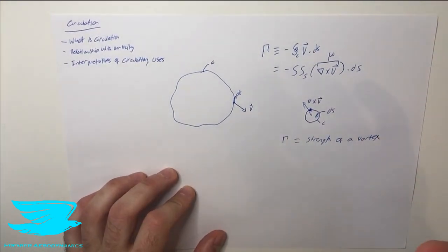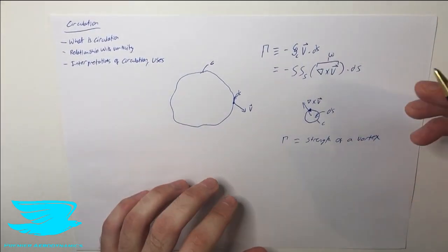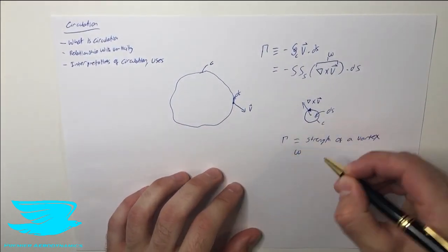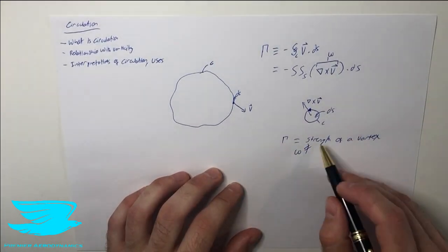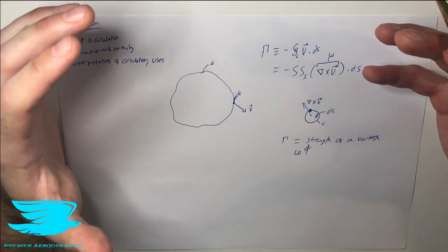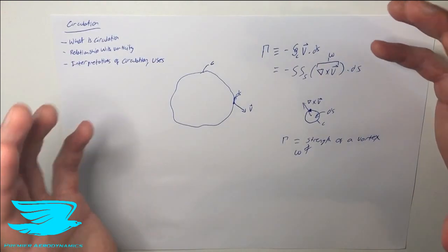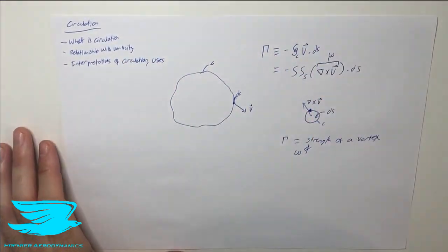So gamma is typically also known as the strength of a vortex. And this is very important, because often people misinterpret the vorticity as the strength, but it's not. The circulation is the strength of the vortex. So you can have a lot of vorticity, but depending on how much of an area it covers, it may or may not be stronger than another vortex. That's why we need to calculate the circulation.